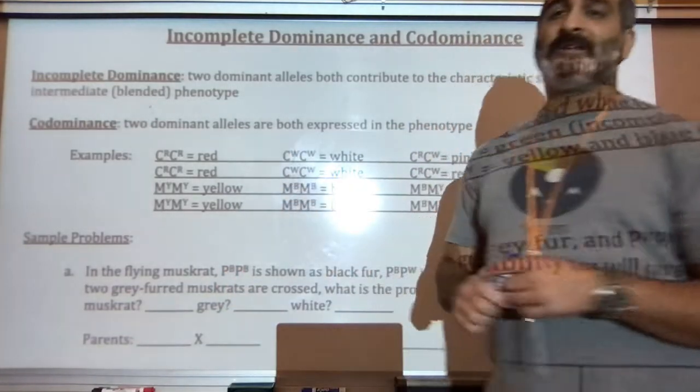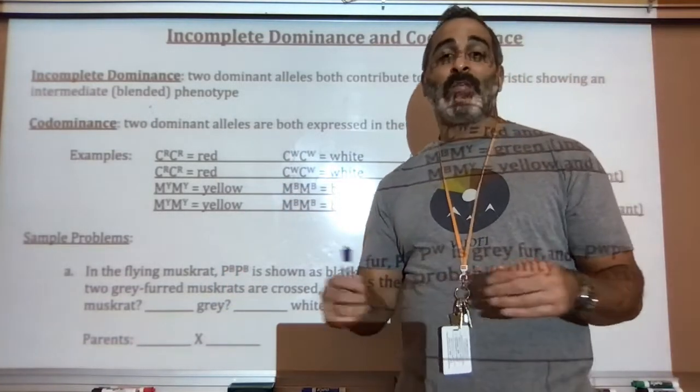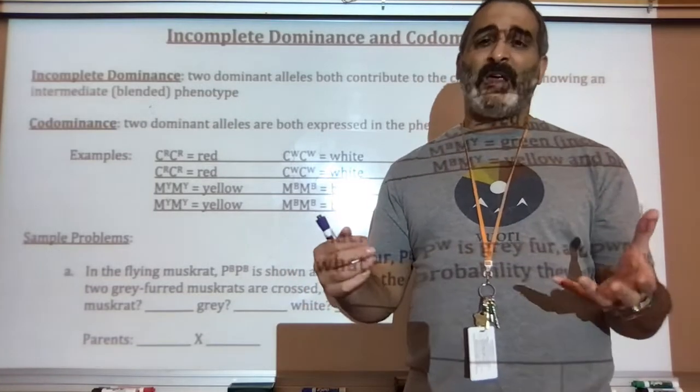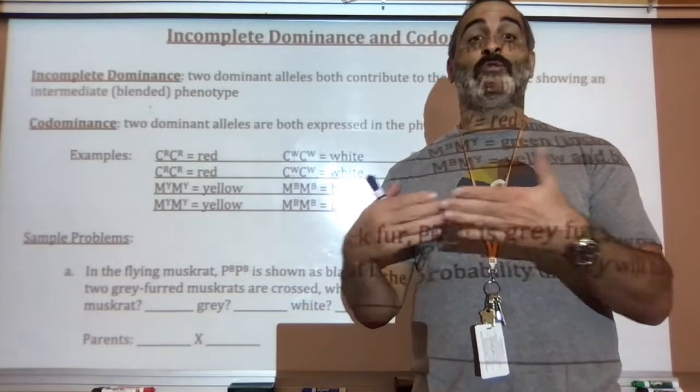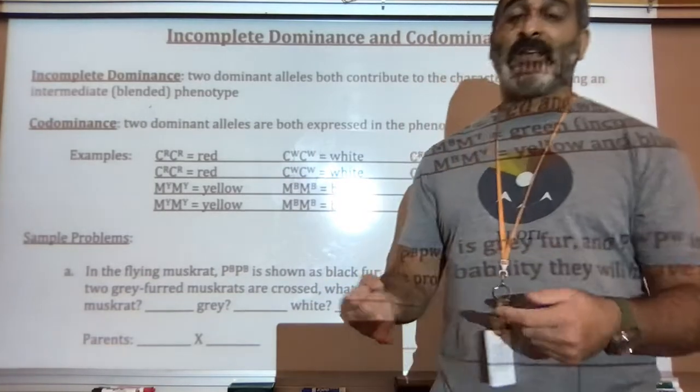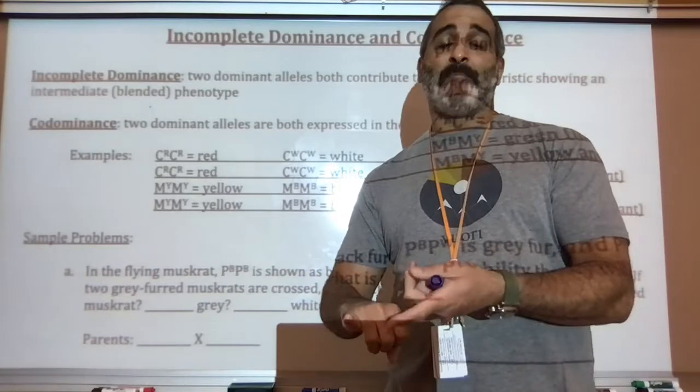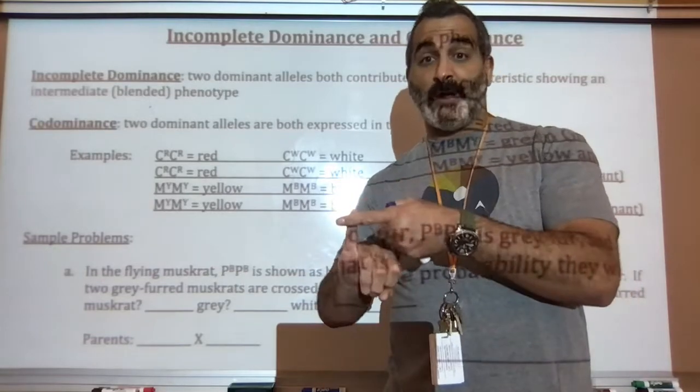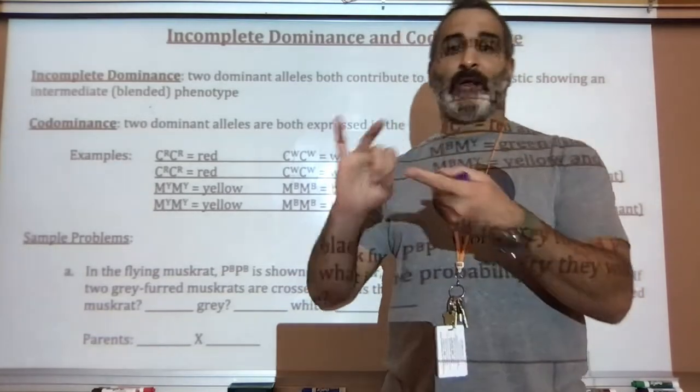Codominance is similar yet different. For example, if you're using colorations, they don't blend. You would have two of each type. So let me give you an example of codominance. There's animals that have this where they might have a mixture of, say, red and white fur or brown and white fur.